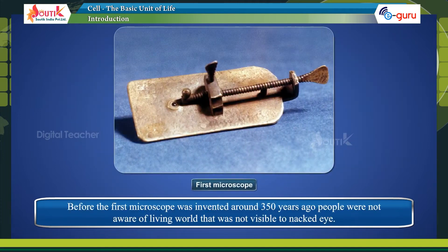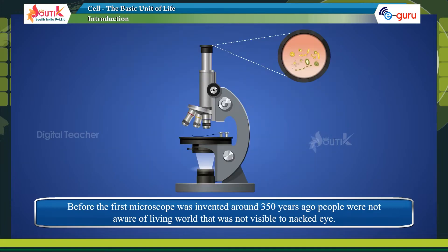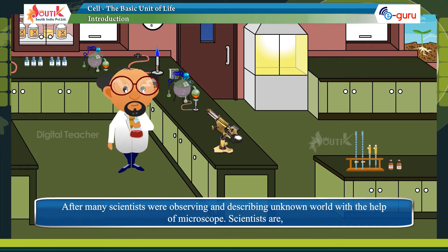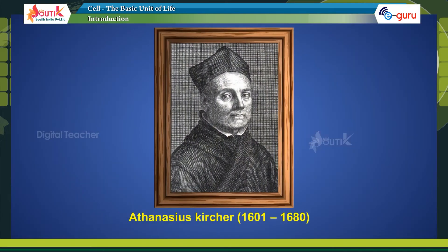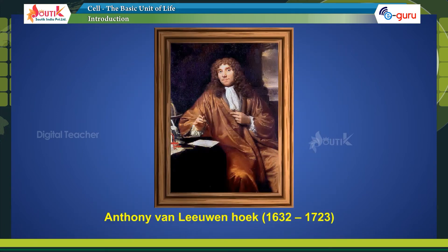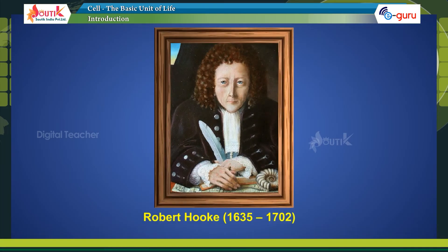Before the first microscope was invented, around 350 years ago, people were not aware of the living world that was not visible to the naked eye. After many scientists began observing and describing this unknown world with the help of the microscope, scientists such as Jan Swammerdam, Antonie van Leeuwenhoek, and Robert Hooke made key contributions.